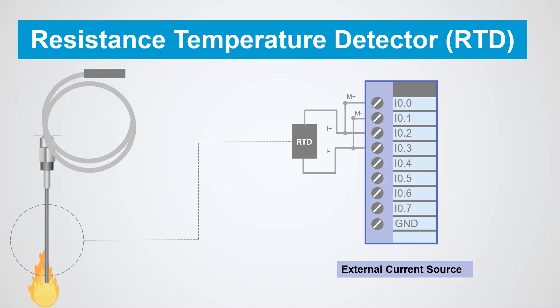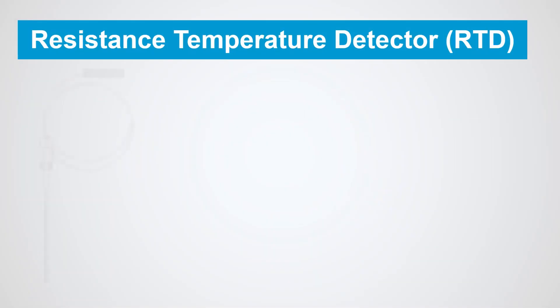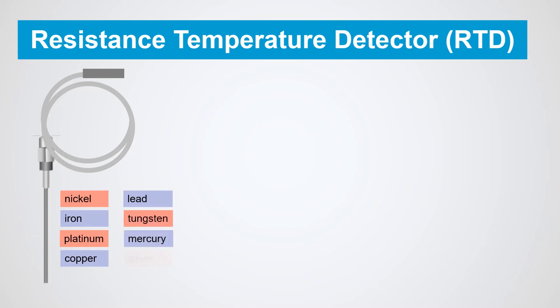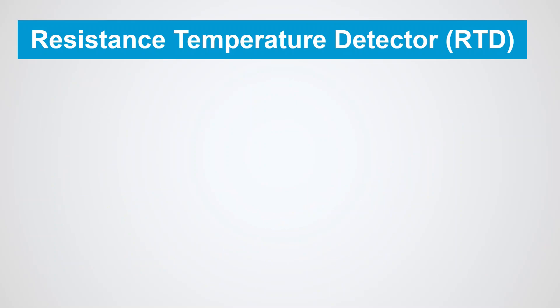This wiring diagram shows the simplest application of an RTD, called two-wire configuration. Three-wire and four-wire configurations provide more accurate measurements. The material used for RTDs is nickel, iron, platinum, copper, lead, tungsten, mercury, silver, etc. One of the most common RTDs is PT100 which consists of a thin film of platinum on a plastic film and shows a resistance of 100 ohms at 32 degrees Fahrenheit. It offers excellent linear resistance temperature.